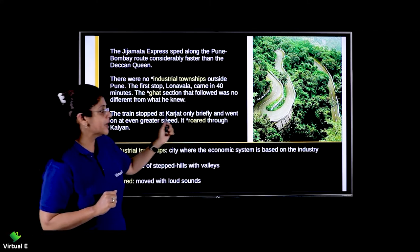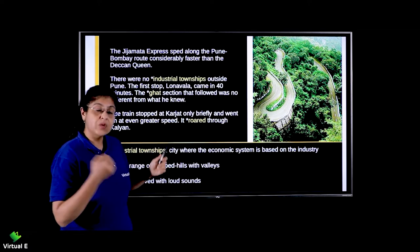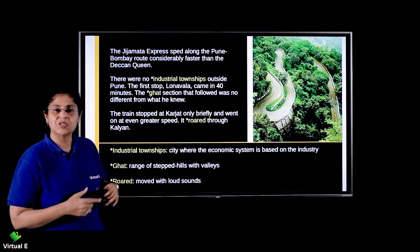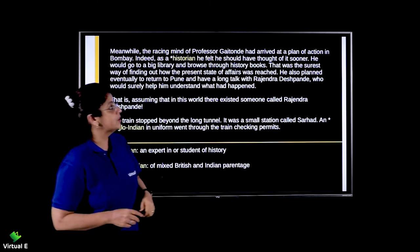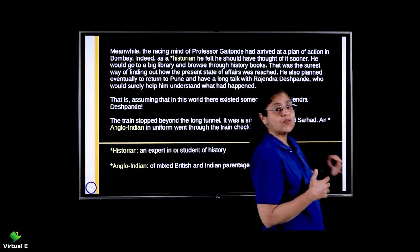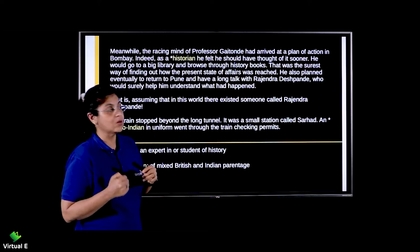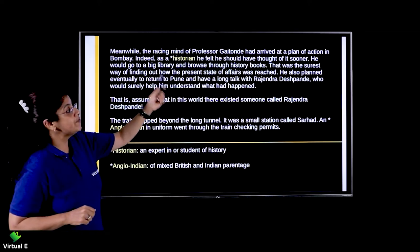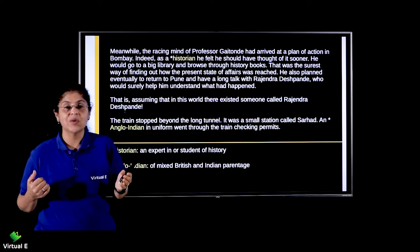The train stopped at Karjat only briefly and went on at even greater speed. It rode through Kalyan with loud sounds, the engine roaring and speeding. Meanwhile, the racing mind of Professor Gaitonde had arrived at a plan of action for Bombay. As a historian, he felt he should have thought of it sooner. He would go to a big library and browse through history books — that was his plan.